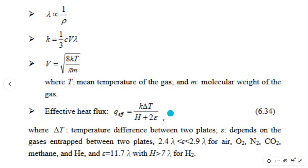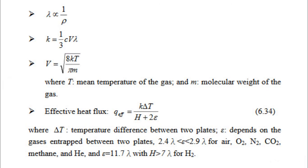The effective heat flux is given by: q_effective equals k times ΔT divided by (h plus 2ε), where ΔT is the temperature difference between the two plates and ε depends on the gas trapped between the two plates. For two plates, ε lies between 2.4λ and 2.9λ for air, and the same range applies for oxygen, nitrogen, carbon dioxide, methane, and helium. The value of ε is 11.7λ when h is greater than 7λ for hydrogen.